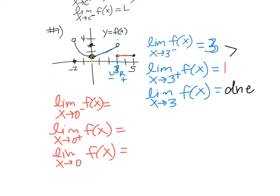Here's where x equals 0. Going towards 0 from the left, the y-value is approaching 1. From the right, it's also approaching 1. So the limit as x goes to 0 is 1 — they're both going to Chick-fil-A. But f(0) is actually 3, that dot right there. The limit and the function value don't have to be equal to each other.